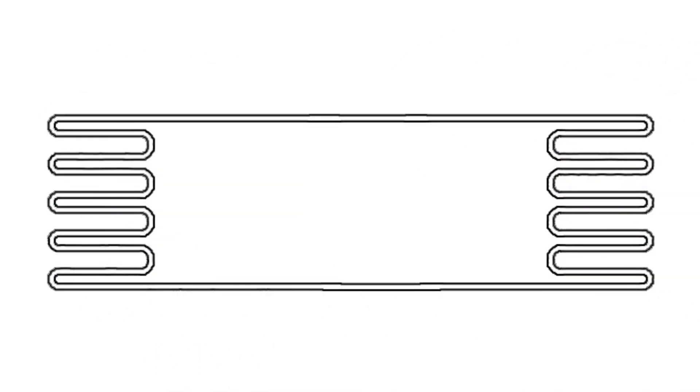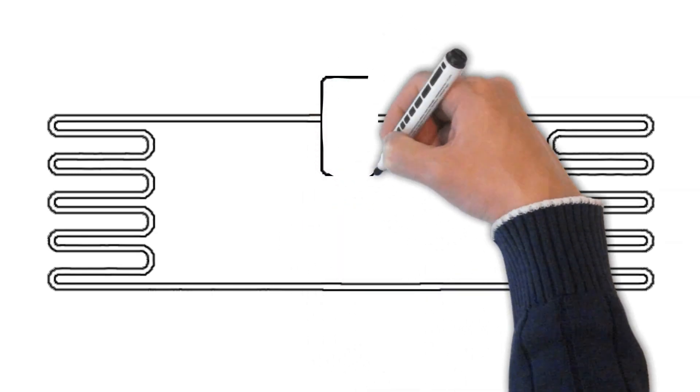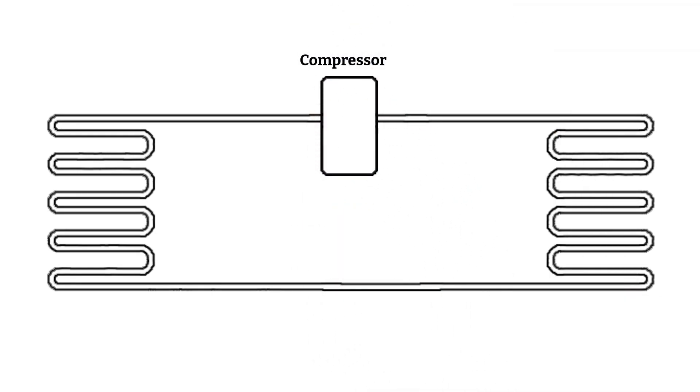At first, let's take a look at the basic refrigeration cycle and its components. This is the tubing. This is the compressor that pumps and cycles the refrigerant.